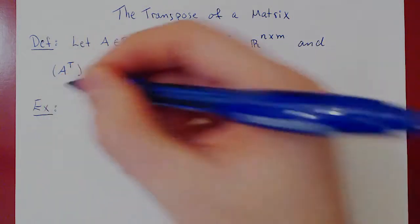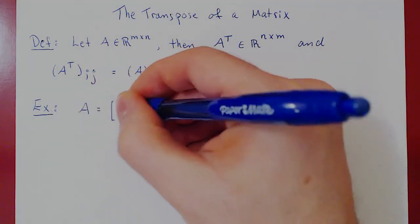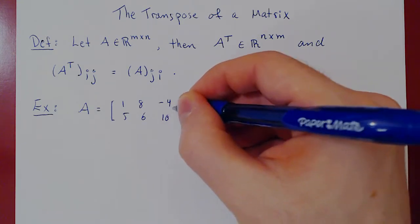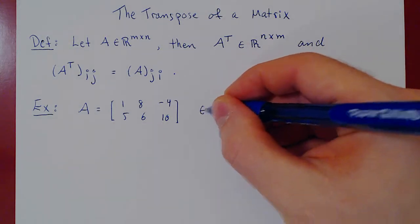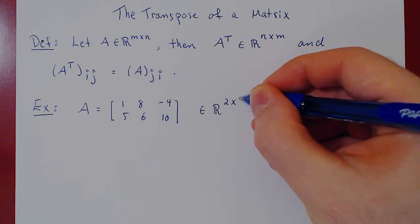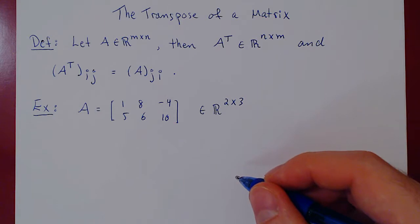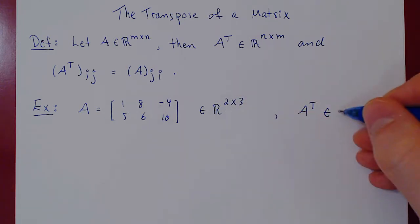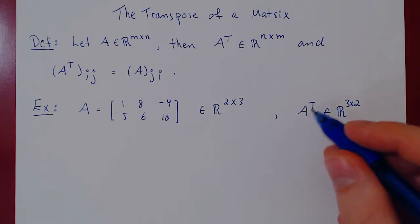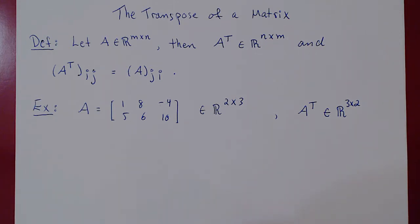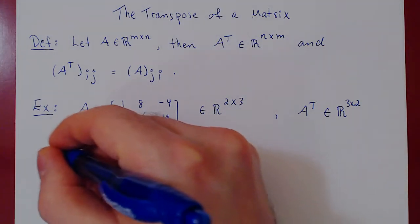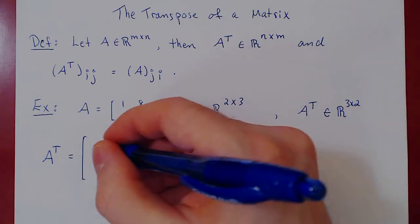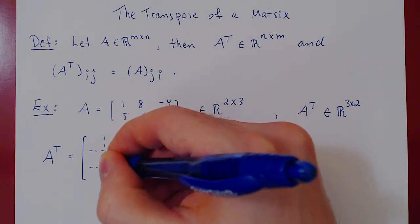Let's take A to be a 2 by 3 matrix. Suppose it's 1, 8, negative 4 in the first row and 5, 6, 10 in the second row. So A is a 2 by 3 matrix — two rows, three columns. We know that A transposed will be a 3 by 2 matrix. Let's find the entries of A transposed one at a time, and then realize we can construct A transposed much more rapidly.